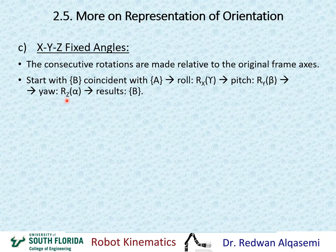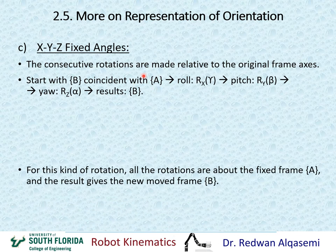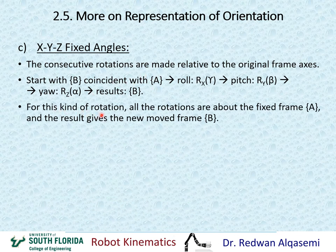Similarly, when we rotate again about z, we're rotating about z of the original frame A, not the z of the new frame. These three consecutive rotations are made in that particular sequence about the original axis of frame A. All the rotations are about the fixed frame A, and the result gives the new moved frame B.